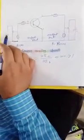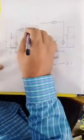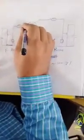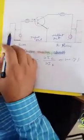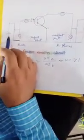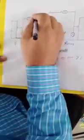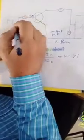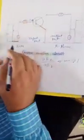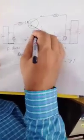Here the negative terminal of the battery is connected to the PNP transistor base, which is N-type. The emitter is N-type, so the negative terminal is connected to the N-type and positive terminal of the battery is connected to the emitter, which is P-type.